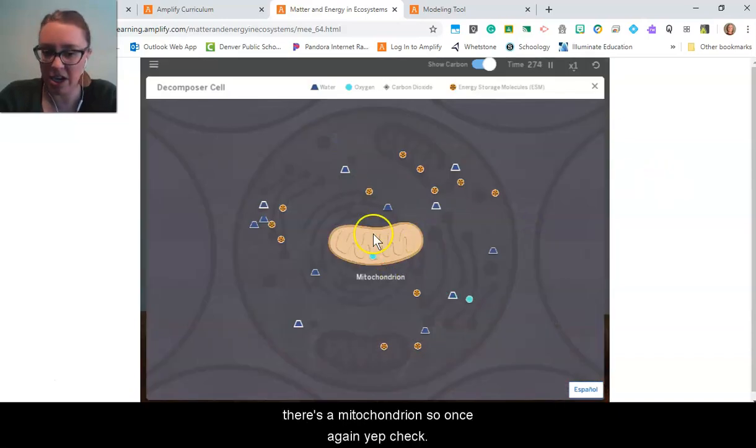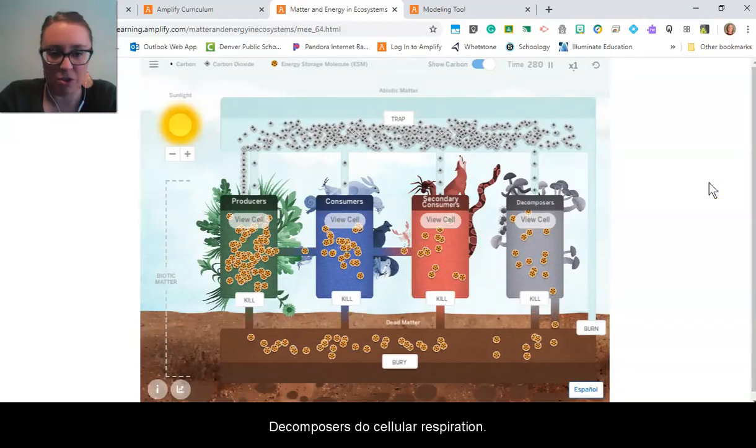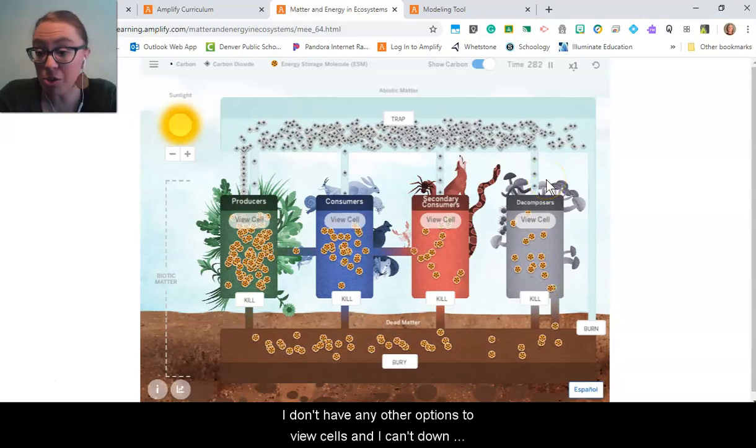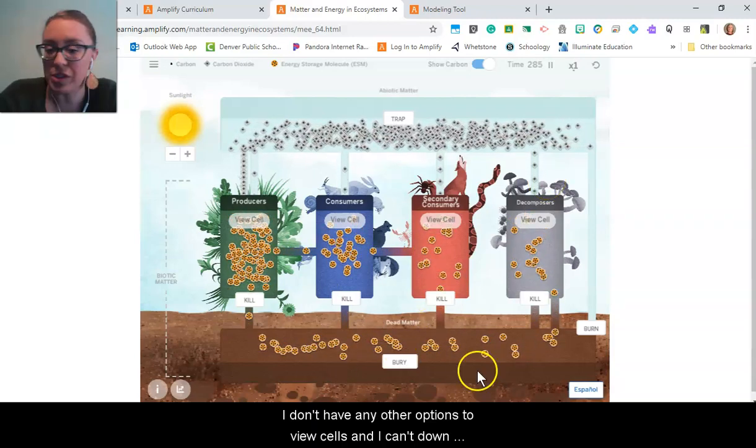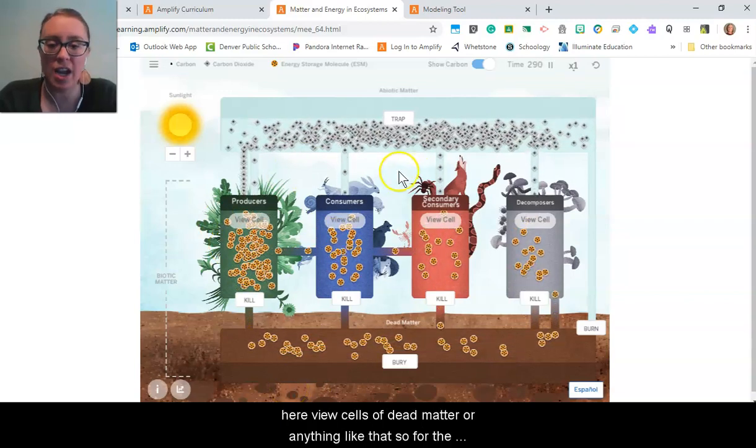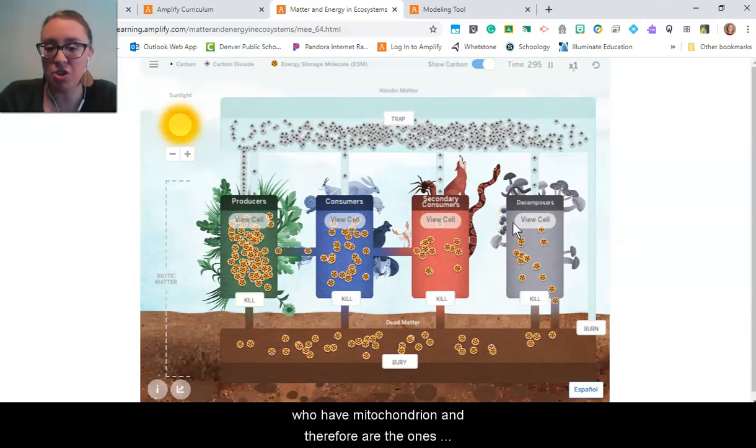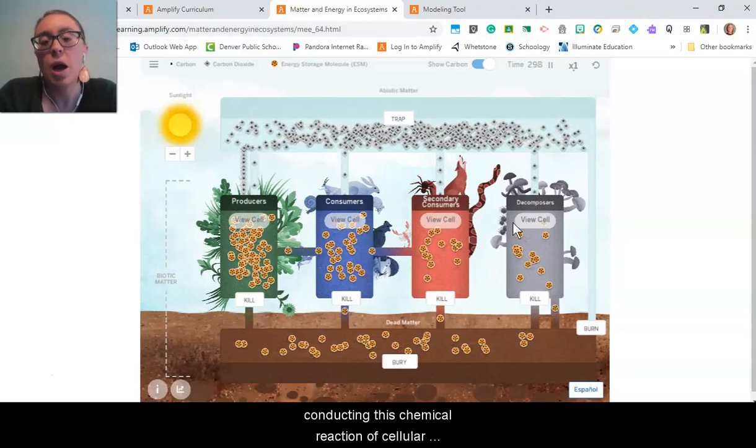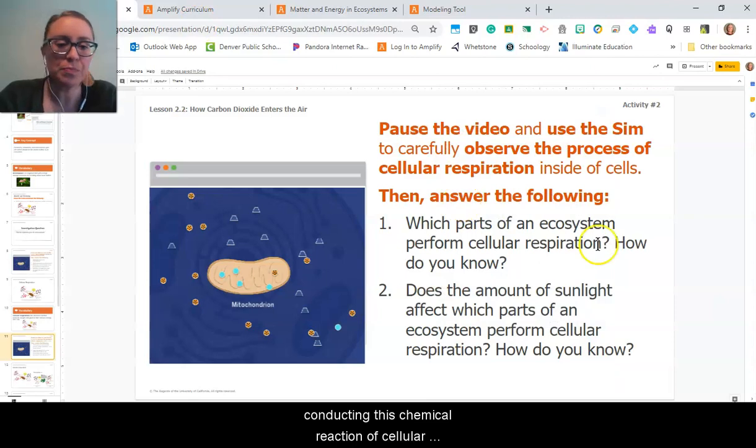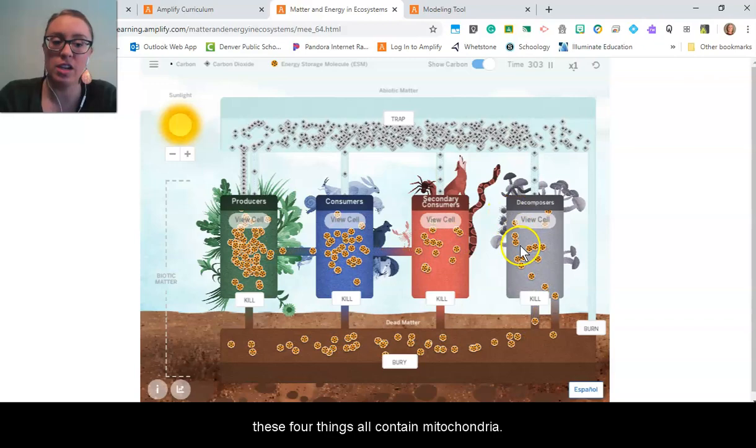So once again, yep, check. Decomposers do cellular respiration. I don't have any other options to view cells - I can't down here view cells of dead matter or anything like that. So for the information that I have, yep, these things are the ones who have mitochondria and therefore are the ones conducting this chemical reaction of cellular respiration. So I've answered that first question. Again, how I know that is that the cells of these four things all contain mitochondria.